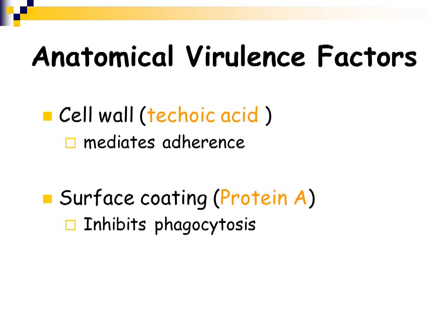The anatomical virulence factors produced by staphylococcus aureus include teichoic acid in its cell wall — it is a gram-positive organism, so it has teichoic acid rather than LPS or lipopolysaccharide or endotoxin. Teichoic acid mediates adherence to host cells. Staphylococcus aureus also has a protein A coating on its surface, which will inhibit phagocytosis, similar to what a capsule does — this coating prevents phagocytes in the host body from engulfing and killing the organism.